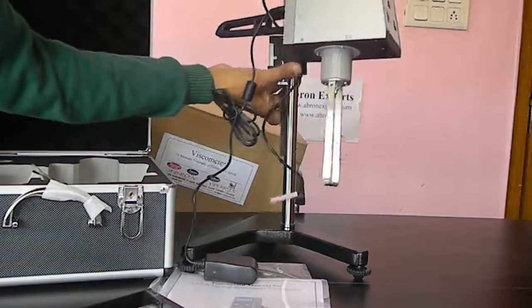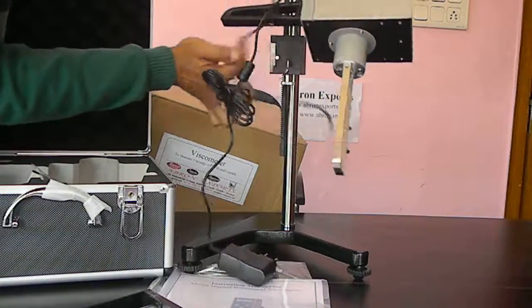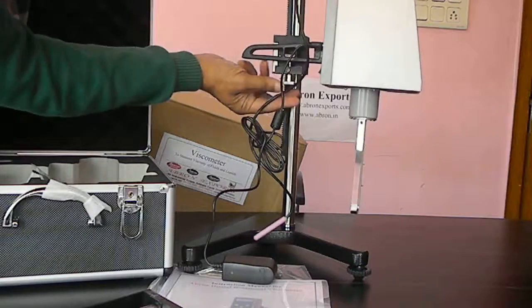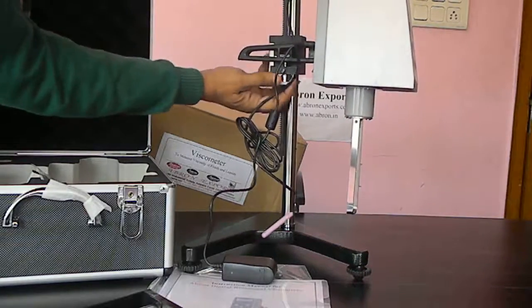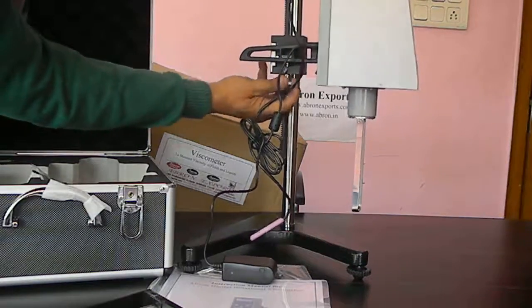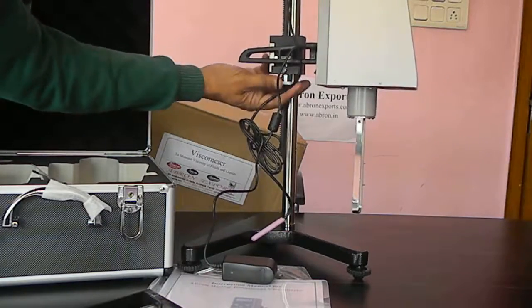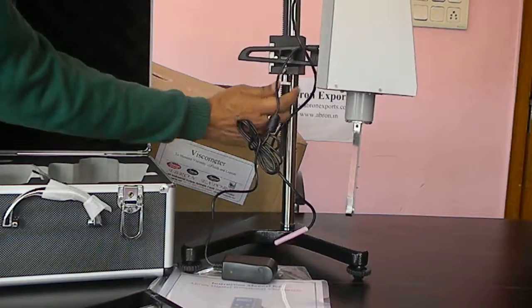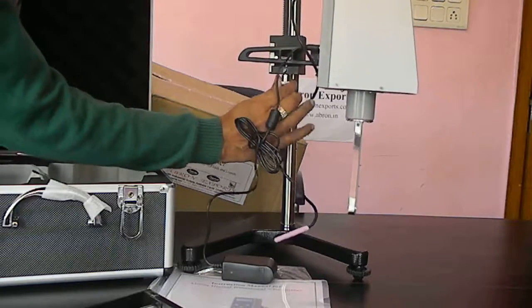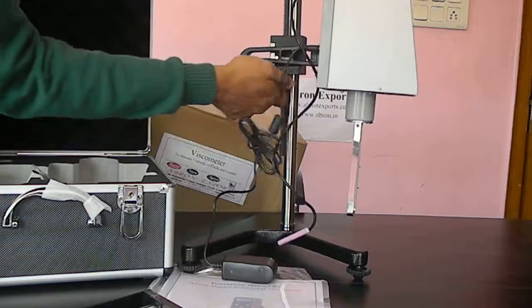Then we have to, there is one hole here and screw. We fix this screw. While this rotating we can fix this screw to the base, so that viscometer is fitted to the stand.